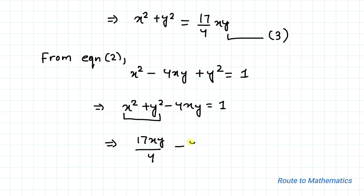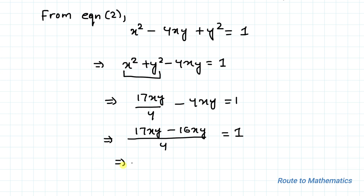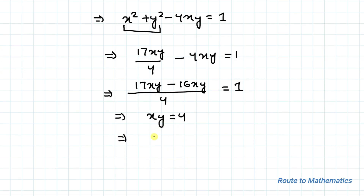Substituting, we have 17xy/4 - 4xy = 1. Taking LCM we get (17xy - 16xy)/4 = 1, which gives xy = 4. This implies y = 4/x. Let's take this as equation 4.